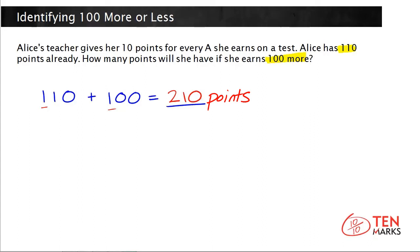Now you can do the same thing if you were asked to find 100 less. So let's just say somehow Alice could lose 100 points. If she loses 100 points starting from 110, you subtract away 100.